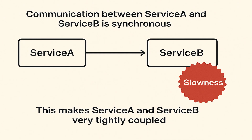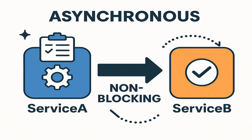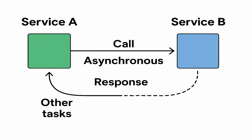This makes service A and service B very tightly coupled because slowness in service B will directly impact service A's performance. Asynchronous, on the other hand, is non-blocking. That means service A will call service B and will not wait for service B to respond in blocking mode.